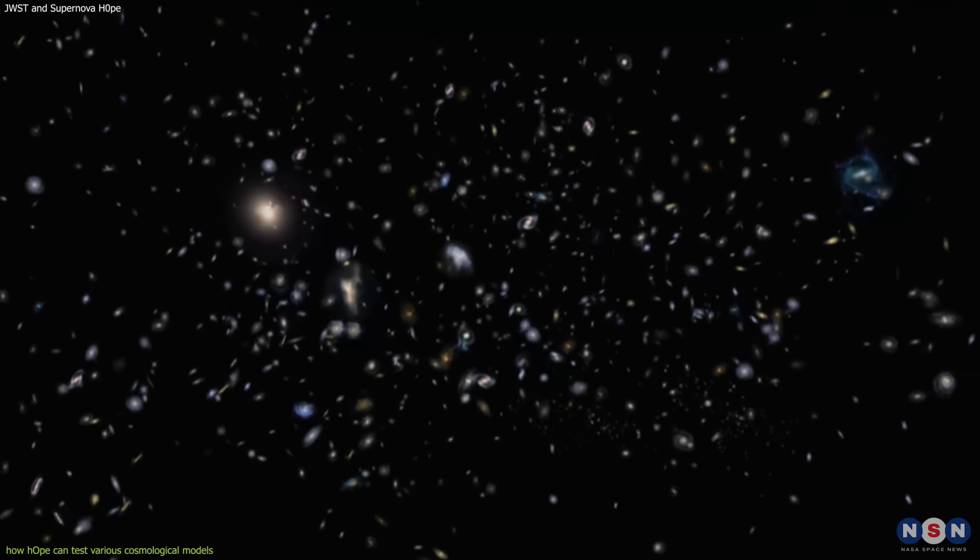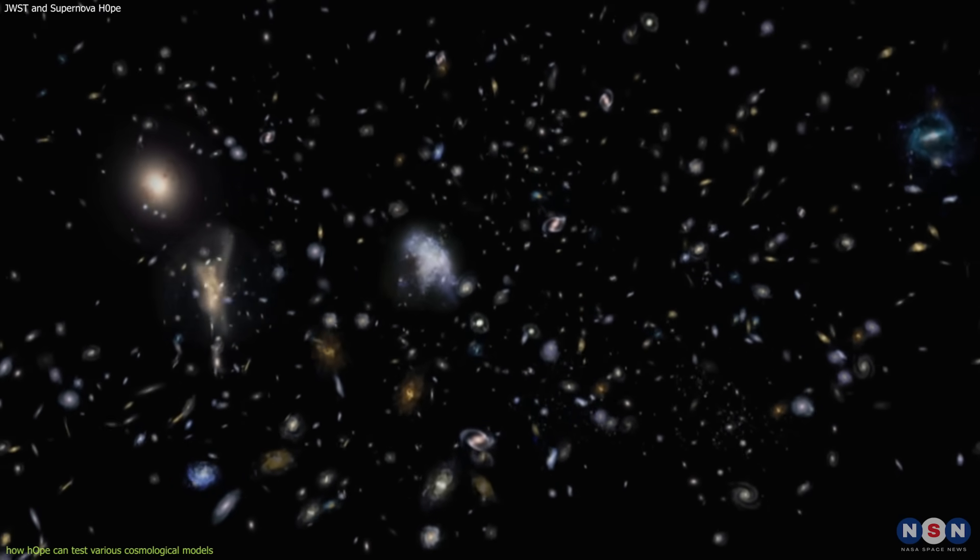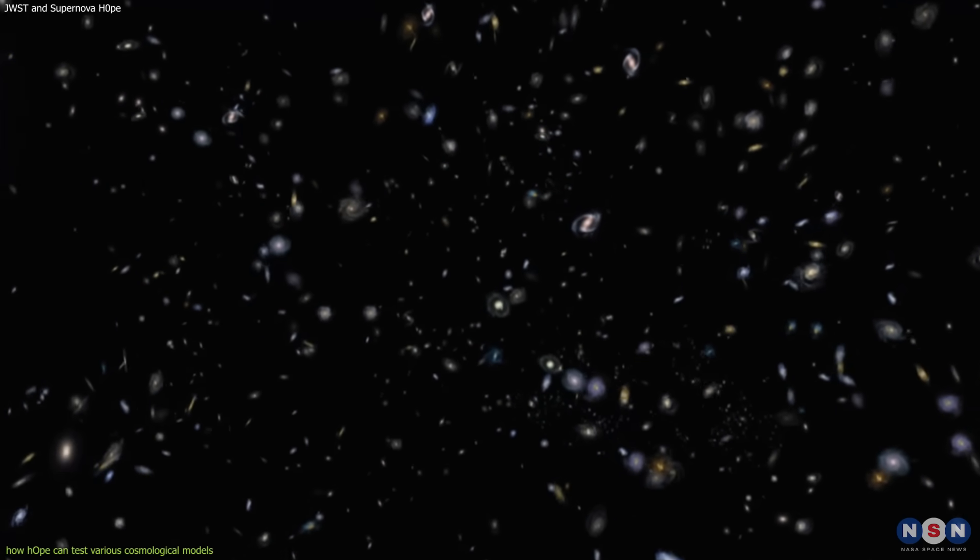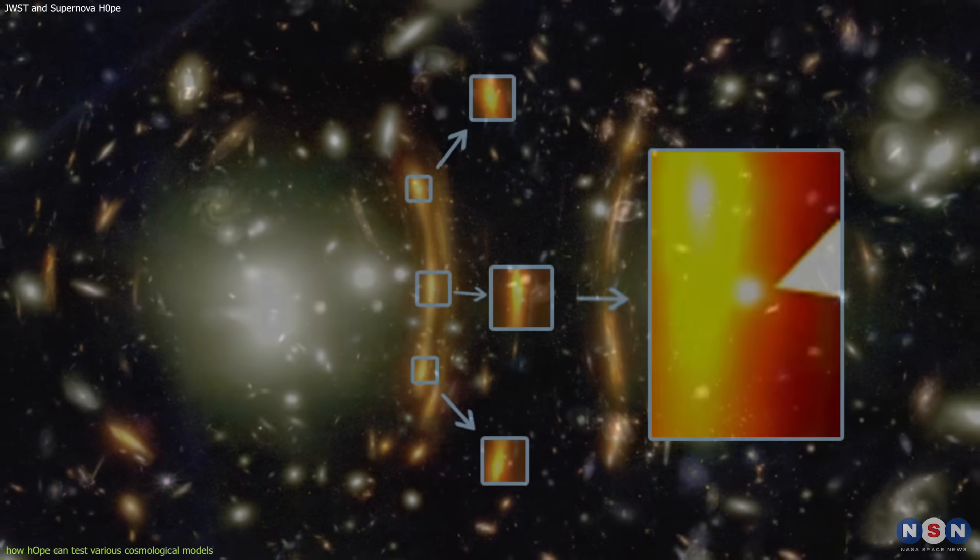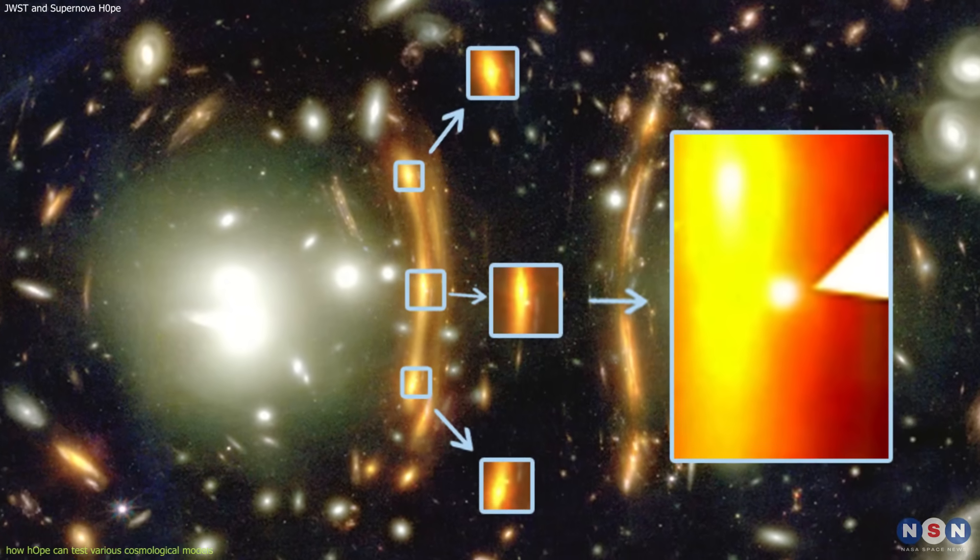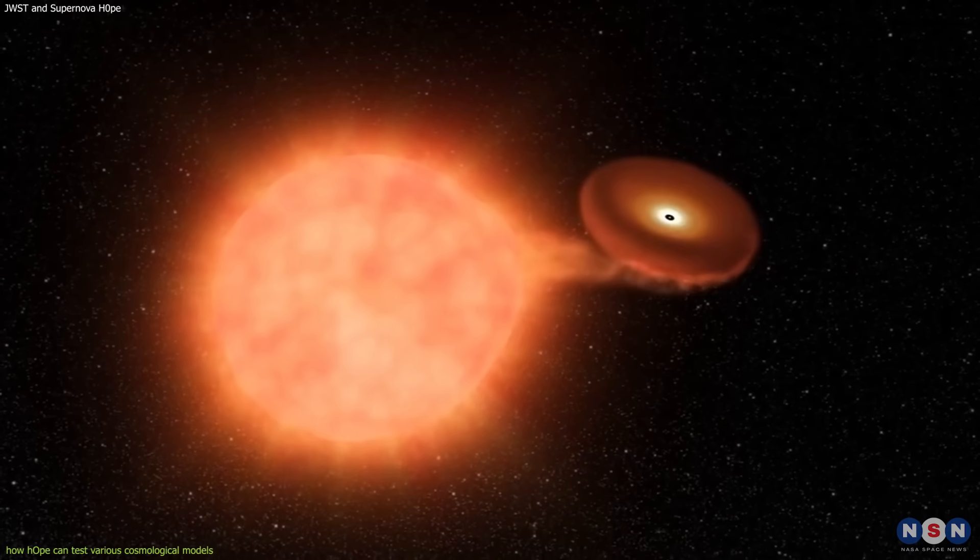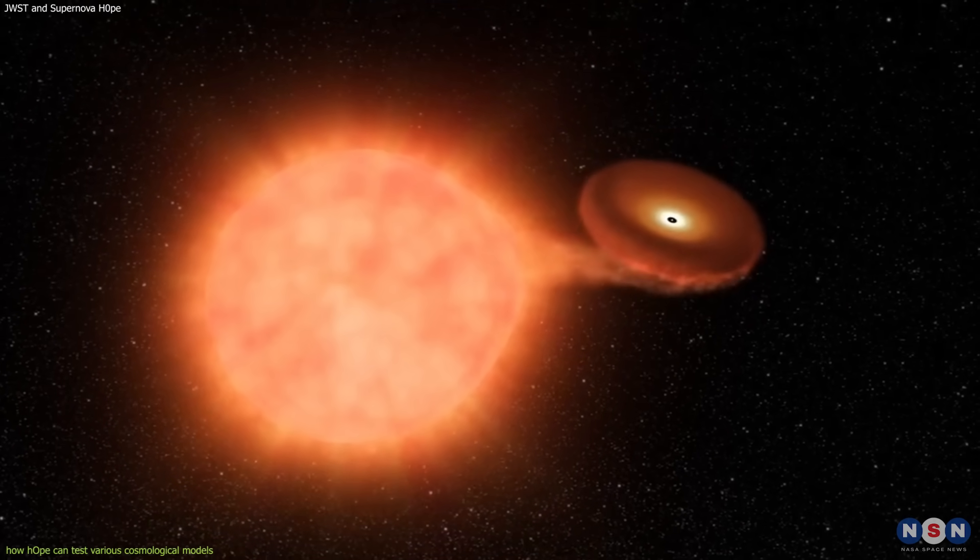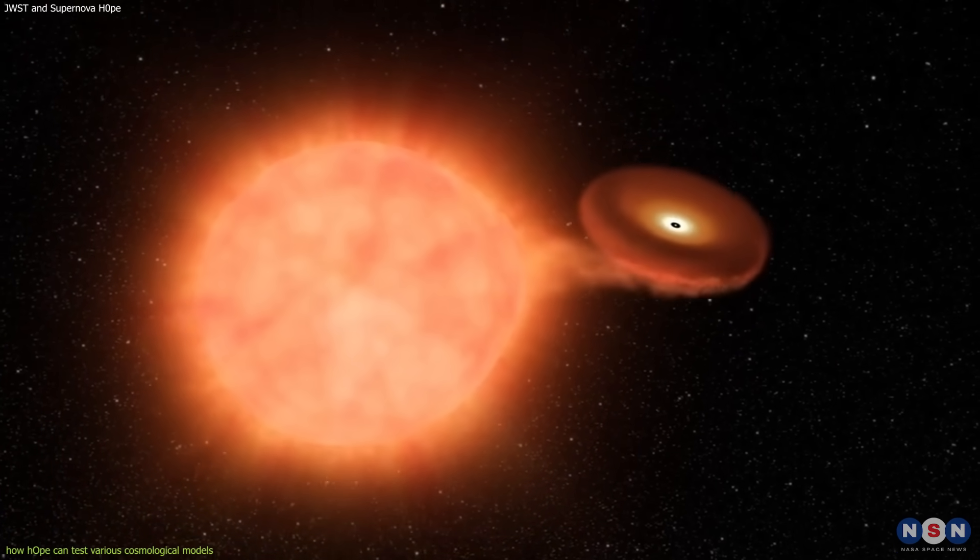But other models allow W to vary over time or space or have different values in different regions of the universe. By measuring the brightness and redshift of H0P and comparing it with other type 1A supernovae, we can constrain the value of W and test these models.